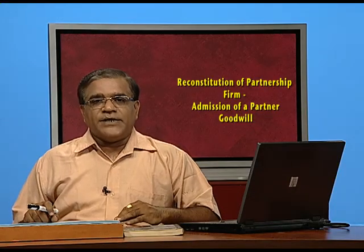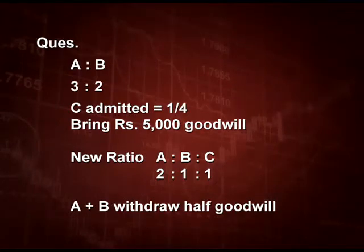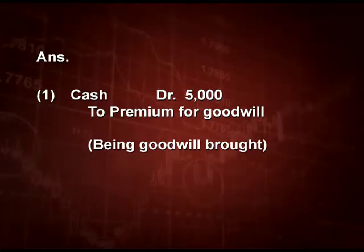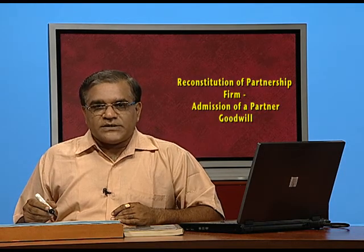Let us understand this by an example. A and B are two partners sharing in ratio 3:2. C is admitted for a one-fourth share. He brings rupees 5,000 as goodwill. The new ratio is A:B:C = 2:1:1. A and B withdraw half of the goodwill. Starting with the entries — C is bringing 5,000 as goodwill. The first entry is: Cash debit to Premium for Goodwill, rupees 5,000.